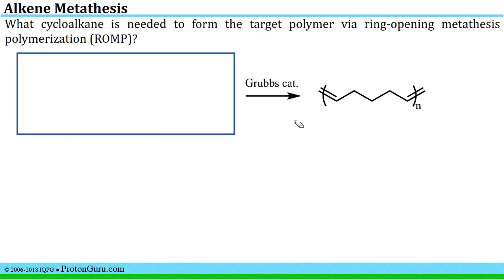We can also do these metathesis problems the other way around, where instead of being given a particular set of reagents, we are given a target product and asked to form that product by some particular process. In this case we're asked to make this polymer by ring-opening metathesis polymerization, which is usually abbreviated as ROMP.